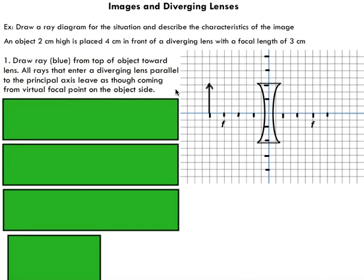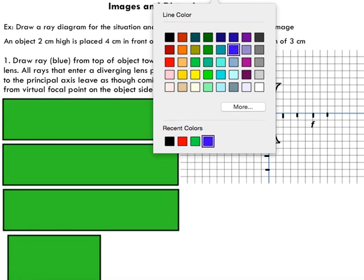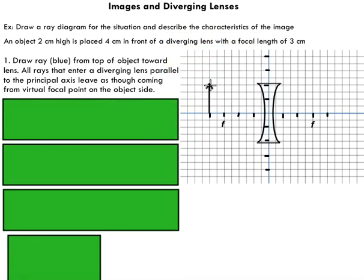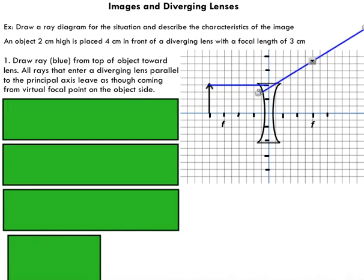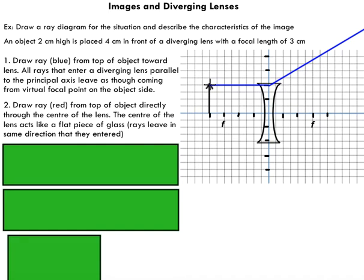Very similar procedure to the last example. The blue ray leaves from the top of the object and strikes the diverging lens parallel to the principal axis. When this ray leaves the lens, it appears to be coming from the focal point on the object side of the lens. The second ray leaves directly from the top of the object and passes through the center of the diverging lens. As with converging lenses, a ray through the center continues in the exact same trajectory that it entered.